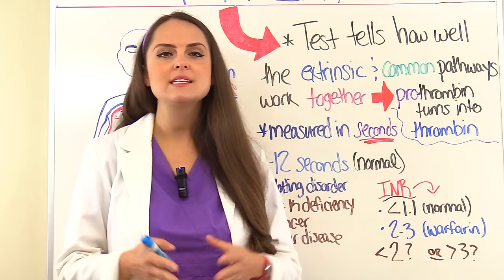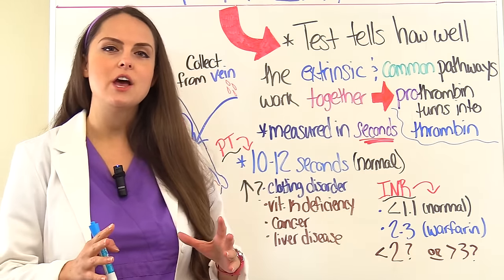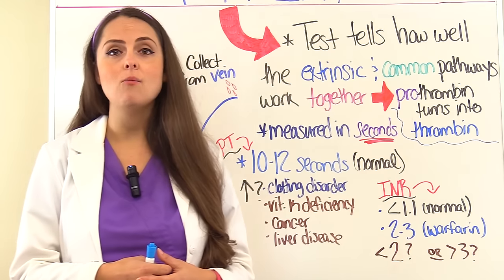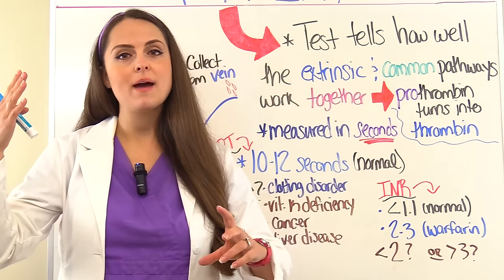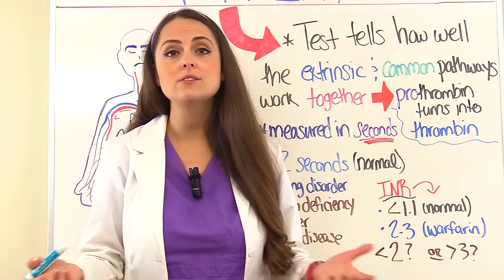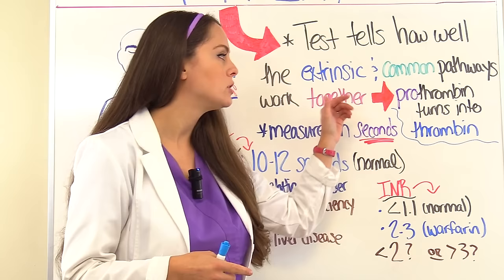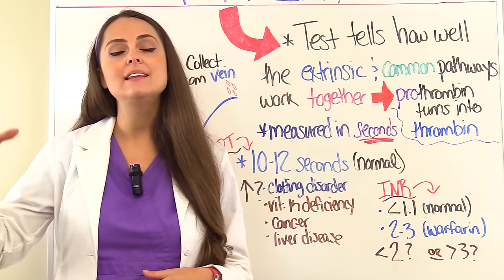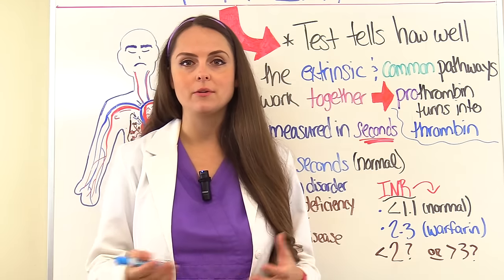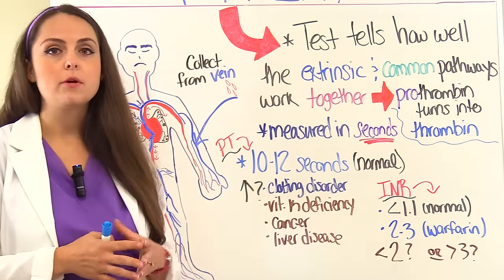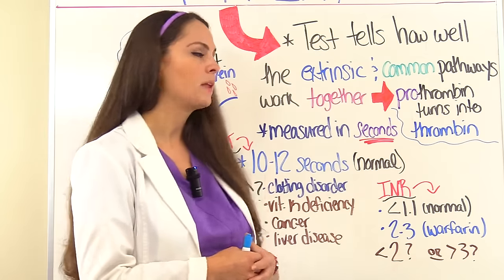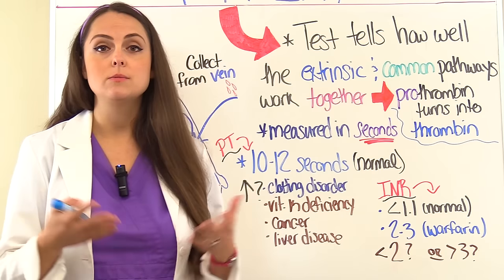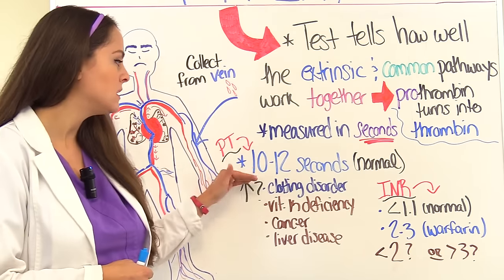In summary, the PT INR level is a test that tells us how well the extrinsic pathway and common pathway are working together. In the end, it tells us how fast prothrombin turns into thrombin, which sets the whole cascade in motion, allowing a clot to form as fibrin develops. The PT prothrombin level is measured in seconds. The normal range varies by laboratory, but generally a normal PT level is about 10 to 12 seconds.